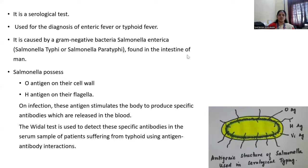It is found in the intestine of man. Salmonella possess O antigen on the cell wall and H antigen on the flagella. In this diagram, you can see O antigen is present on the cell wall and H antigen is present on the flagella. And one more antigen is Vi antigen, which is present in the capsule. On infection, these antigens stimulate the body to produce specific antibodies which are released in the blood.